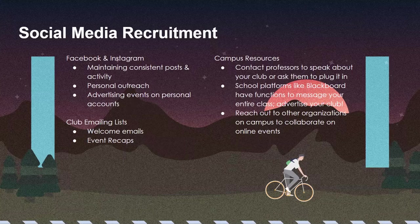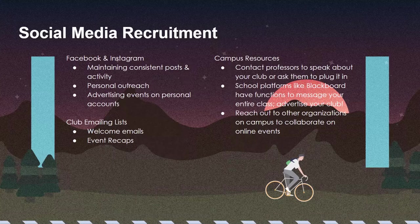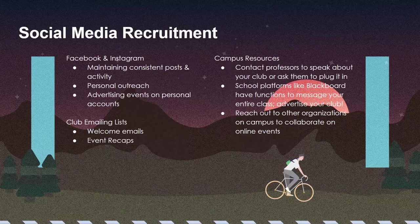There's also personal outreach — privately messaging people, or DMing as they say, so that you can get people to come out. Sometimes people just need a little bit of that extra push to attend an event. Another thing is advertising events on personal accounts. Your network includes people you've met in classes that you might follow. Getting your board members or even general members to advertise upcoming events on their personal accounts is something that is very effective.